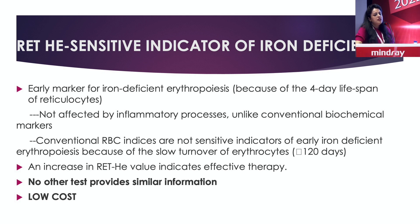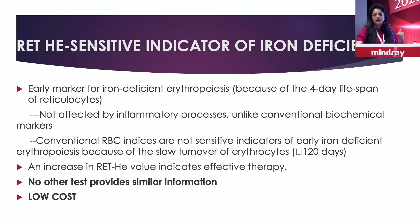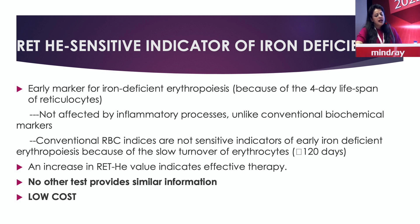It is also a very good parameter to evaluate the effectiveness of therapy. When you give iron, reticulocyte hemoglobin is one of the first parameters to show significant improvement. It is one of the best parameters available at very low cost.